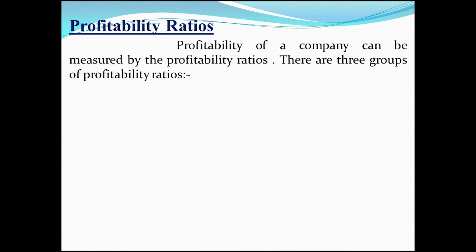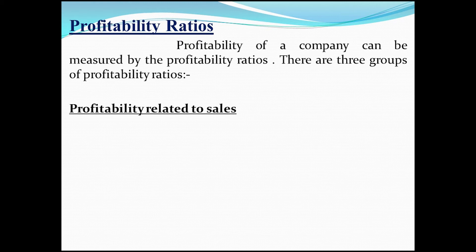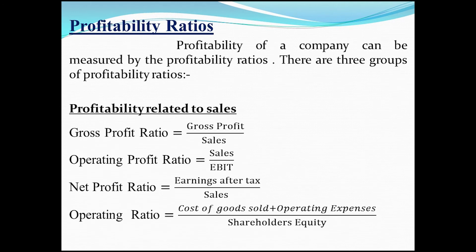Next is profitability ratios. The profitability of a company can be measured by profitability ratios, which are divided into three main groups. The first group is profitability related to sales, which includes gross profit ratio, operating profit ratio, net profit ratio, and operating ratio. Gross profit ratio equals gross profit divided by sales. Operating profit ratio equals EBIT divided by sales. Net profit ratio equals earnings after tax divided by sales. Operating ratio equals cost of goods sold plus operating expense, divided by shareholders' equity.